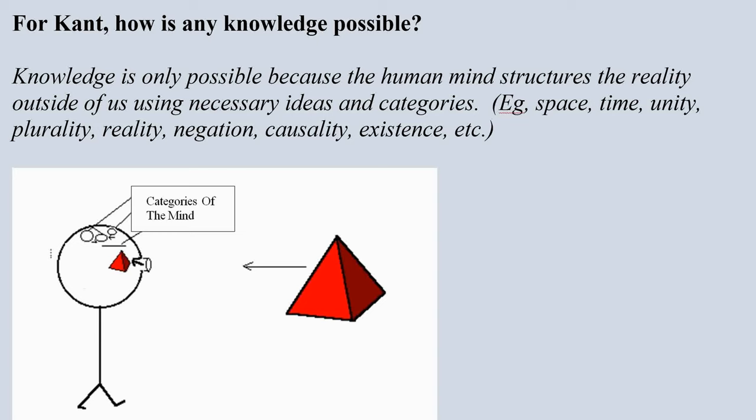Those necessary ideas and categories are things like space, time, unity, plurality, reality, negation, causality, and existence. So for Kant, all of these categories, or for him space and time, which he calls...